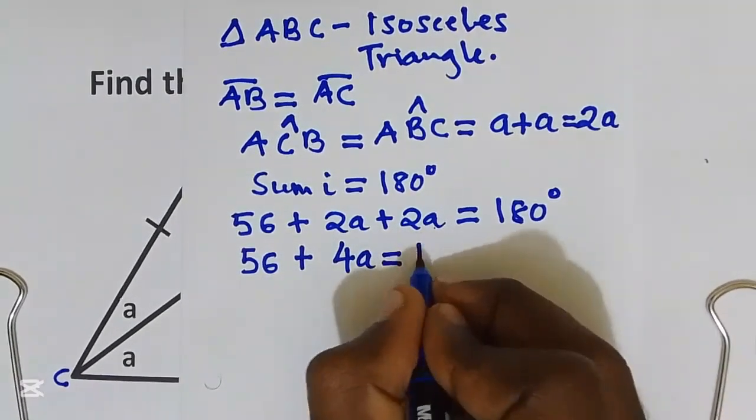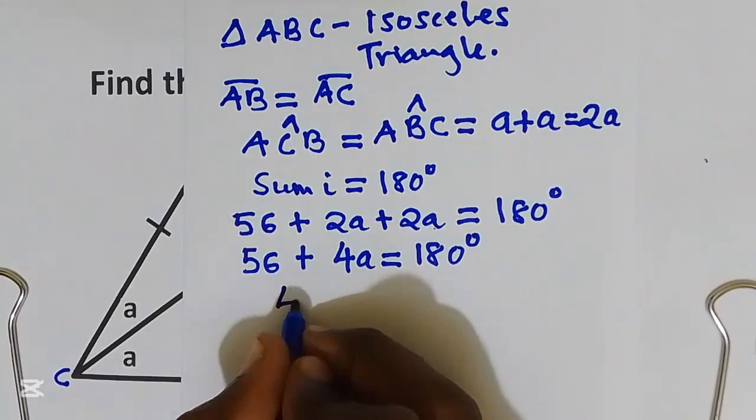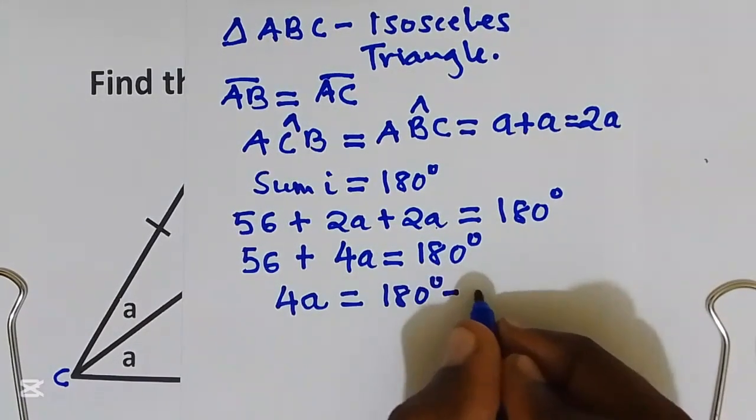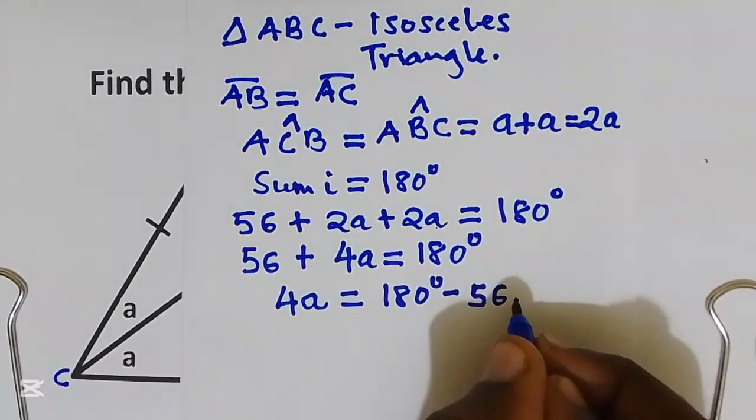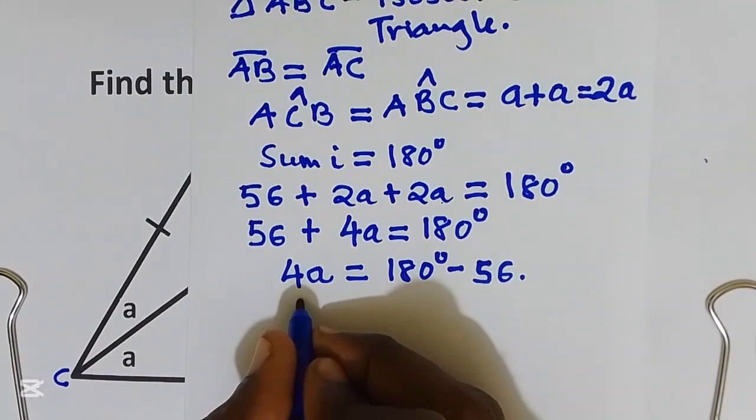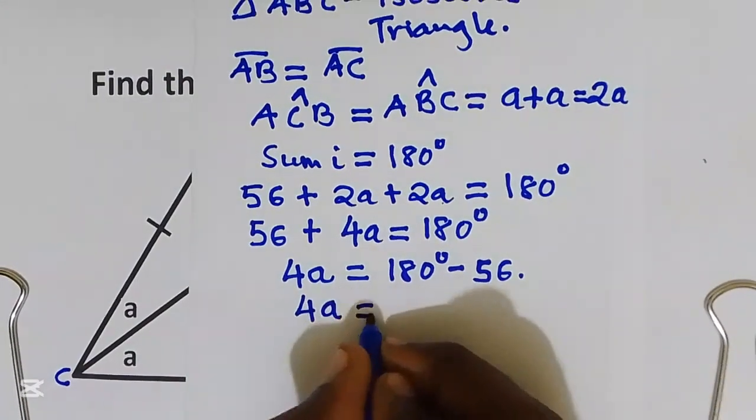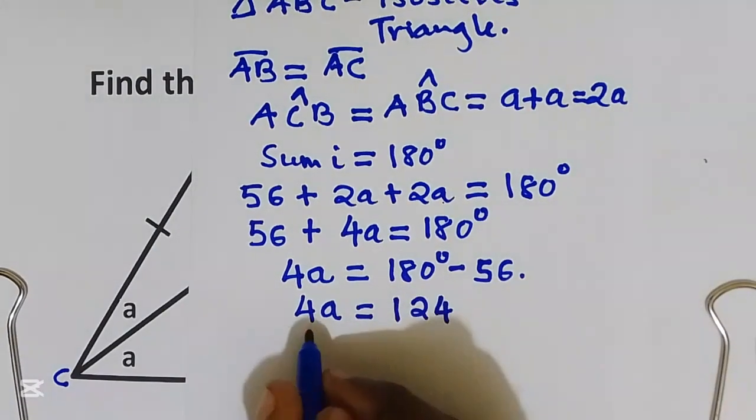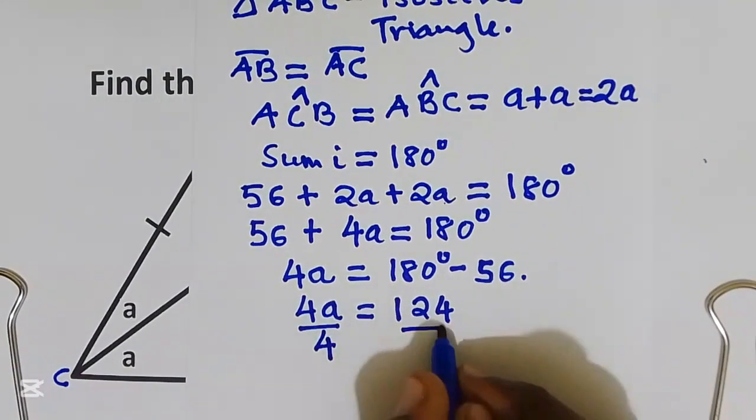4a is equal to 180 degrees take away 56. This gives us 4a equals 124. I'm going to divide by 4, which gives us 31 degrees.